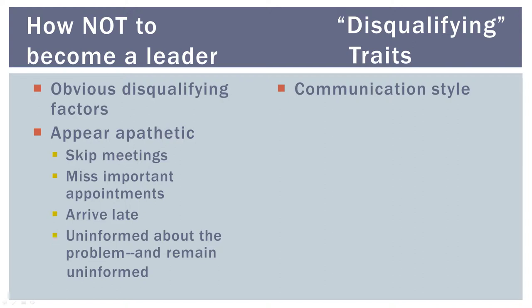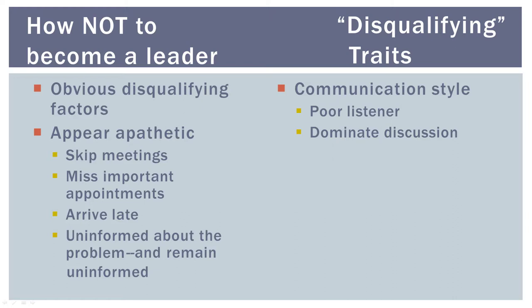Now let's turn to your communication style, starting with how effective of a listener you are. If you are a poor listener, you won't get the necessary information, and people won't be likely to offer you information. It's hard to lead when you don't have the information you need. If you attempt to dominate the discussion—you don't allow others to speak, or you interrupt or talk over someone—people often grow to resent you, and you won't get alternative views and ideas, dooming your ability to lead effectively. Even if you don't dominate the discussion, if you are rigid and inflexible when expressing your viewpoints, it reduces participation from others, contributing to resentment and poor information gathering.